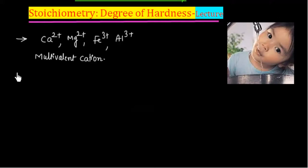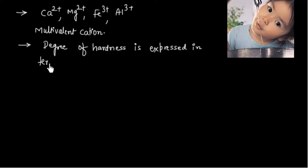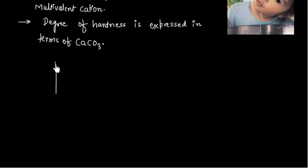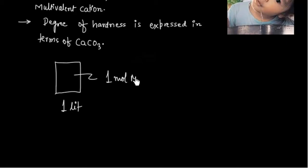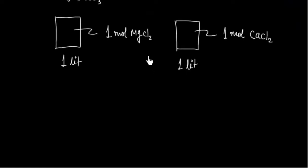The degree of hardness is expressed in terms of CaCO₃. To understand what this means, consider 1 liter of water containing 1 mol of MgCl₂, and another sample of 1 liter of water containing 1 mol of CaCl₂. In terms of degree of hardness, these two water samples are essentially equivalent.